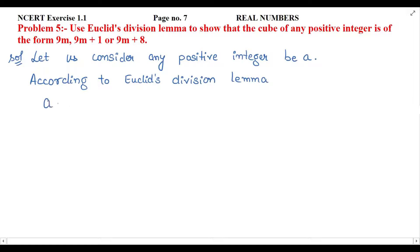If we see Euclid's division lemma, we have A = BQ + R. So, A equals BQ plus R. If we have this format, we can write it in BQ plus R format. Now, the first integer given, B, we have 9. So, we have A = BQ + R.